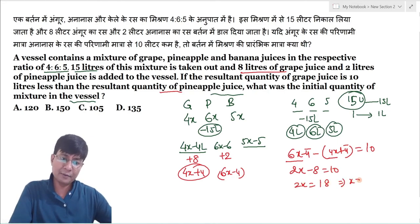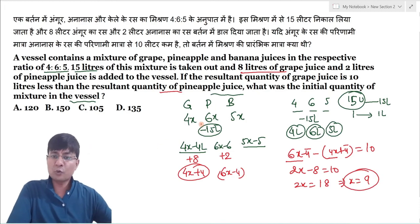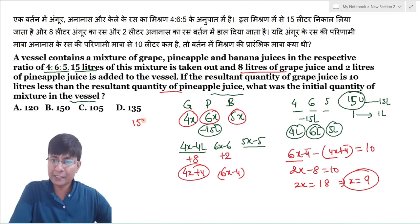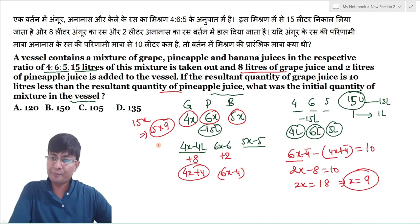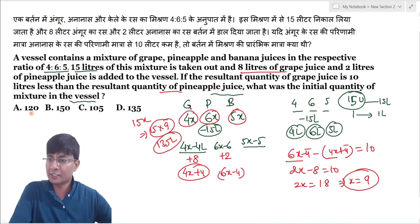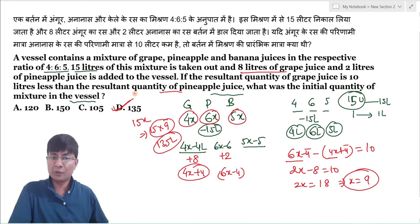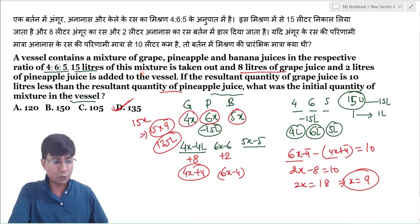That implies x की value 9 मिल जाएगी. So initial quantity कितना था — 4x, 6x और 5x, that implies 15x था. तो total value होगा 15 into 9 = 135 liter. So हमारा answer होगा option number D. I hope यह आपको समझ में आ गया होगा. Thanks for watching the video — if you like the video, do subscribe the channel and share the channel with your friends.